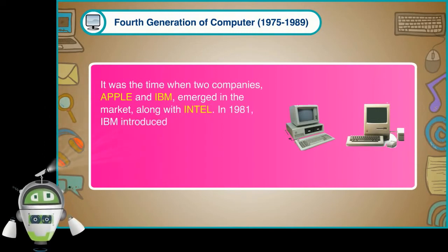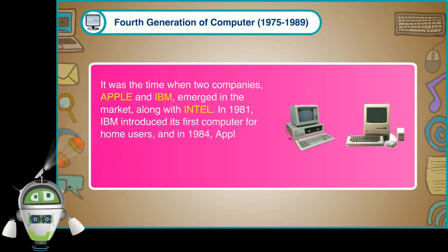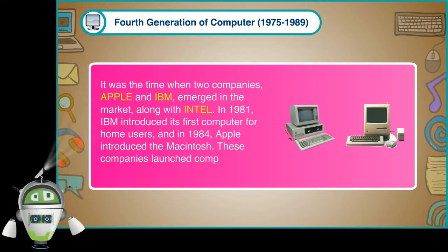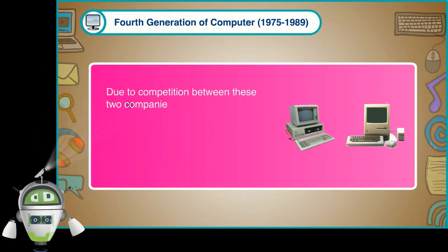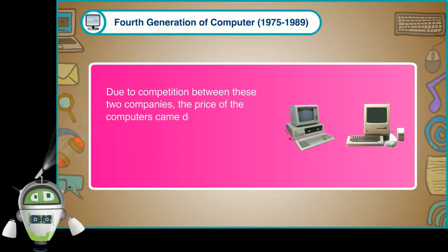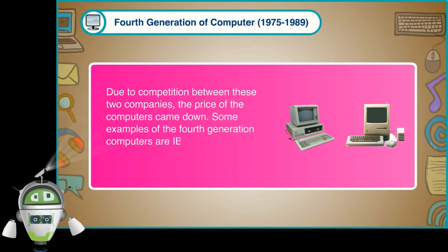In 1981, IBM introduced its first computer for home users, and in 1984, Apple introduced the Macintosh. These companies launched computers for everyone. Due to competition between these two companies, the price of the computers came down. Some examples of the fourth generation computers are IBM 4341 and Apple II.